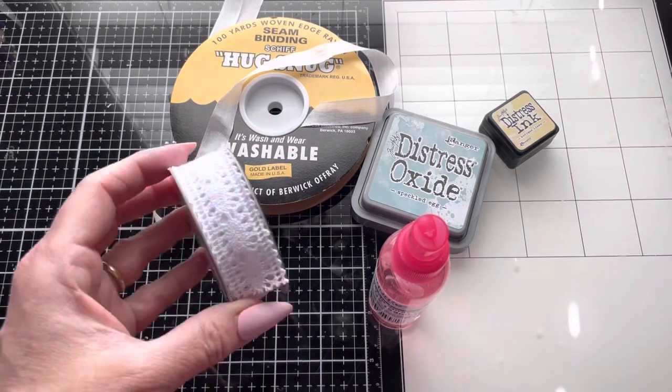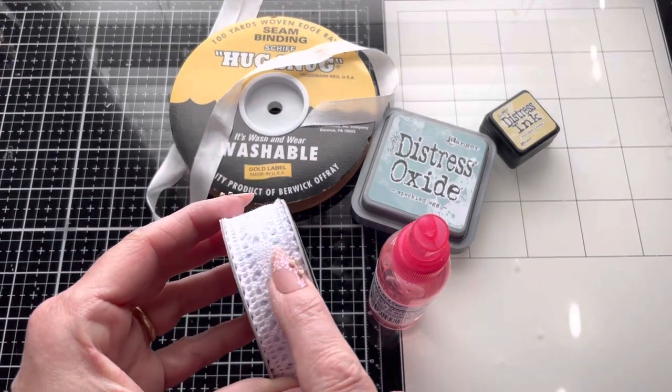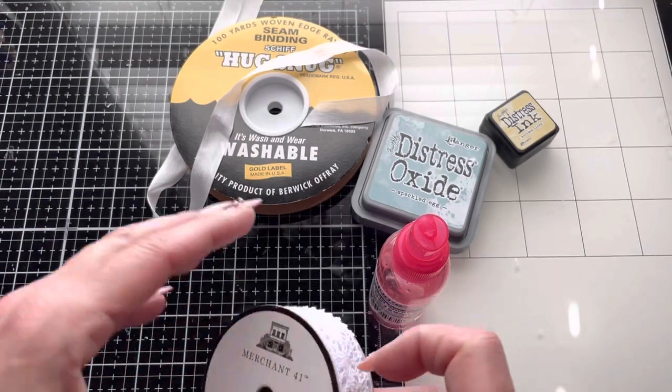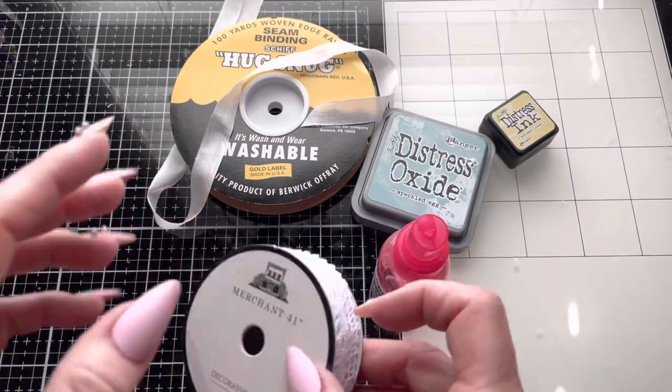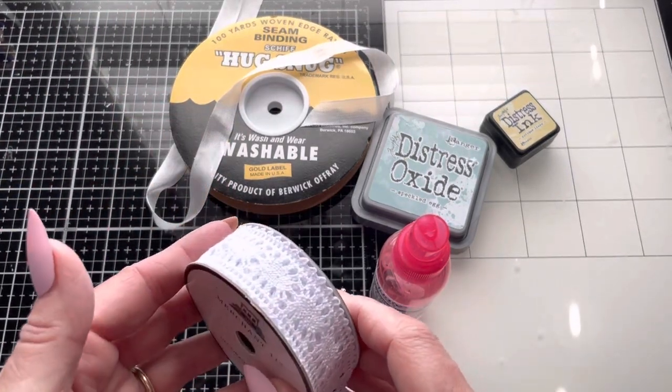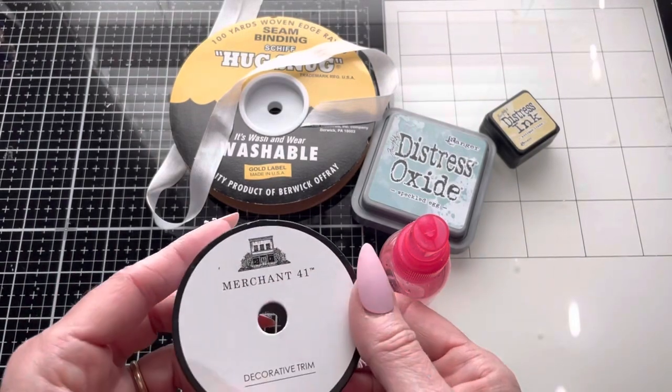The first thing you need is white material. A lot of us purchase off-white colors of ribbon and laces, but you need to start with white or you're not going to get a true color.